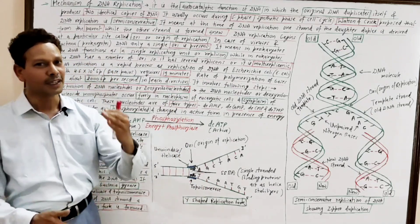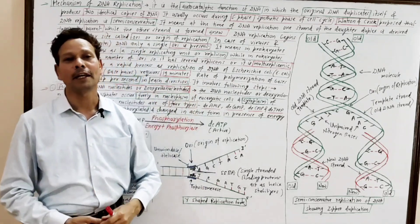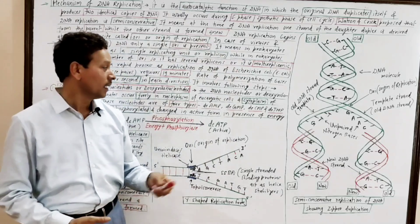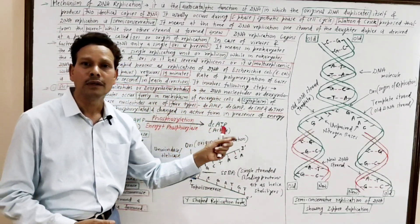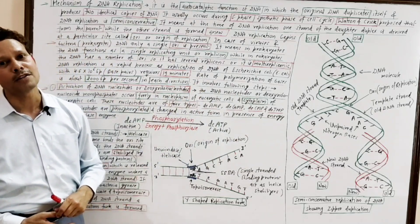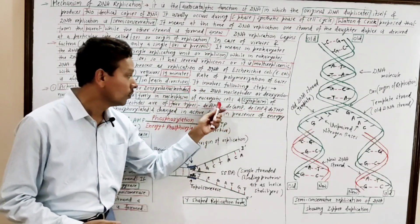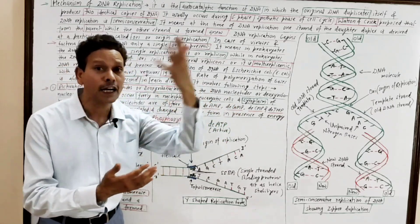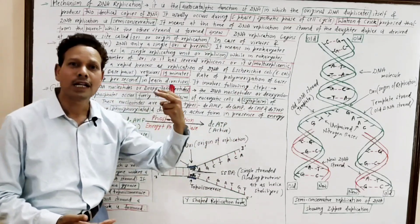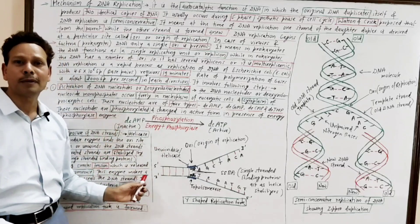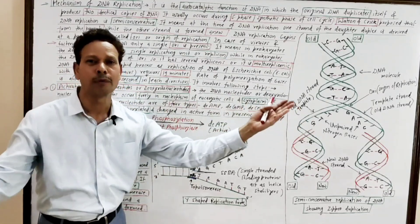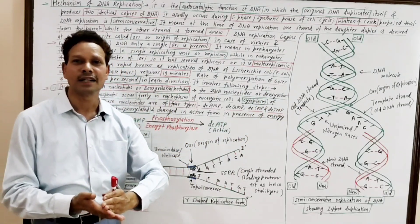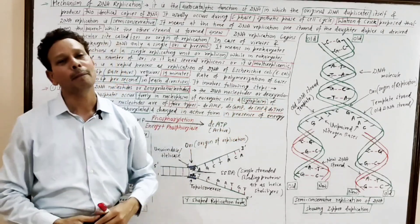To summarize the mechanism so far: DNA replication first requires DNA nucleotides, which are freely present in the cytoplasm or nucleoplasm as inactive monophosphate forms and are phosphorylated and activated by phosphorylase. In the second step, both strands of the DNA helix are separated — exposure of DNA strands — resulting in a Y-shaped replication fork.